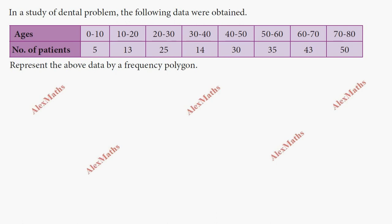Hi students, this is Alex here in the product lab. In a study of dental problems, the following data were obtained for every group of ages from 0 to 10, 10 to 20, 20 to 30, up to 70 to 80. This is the number of patients — frequency over age group. Represent the data by a frequency polygon.